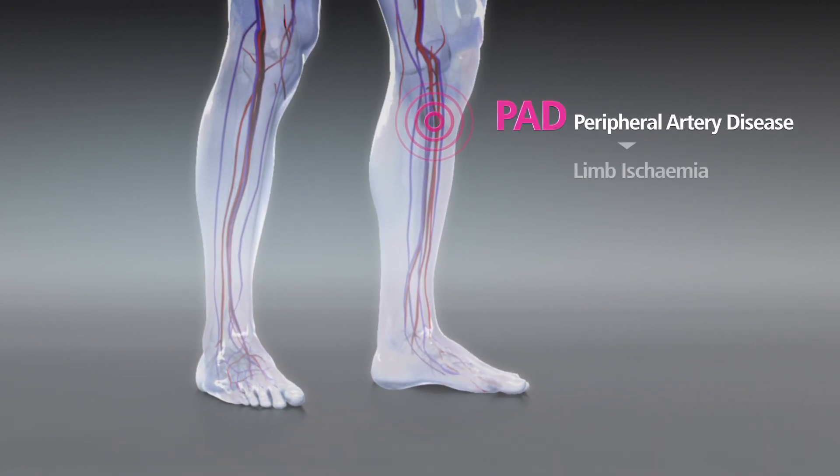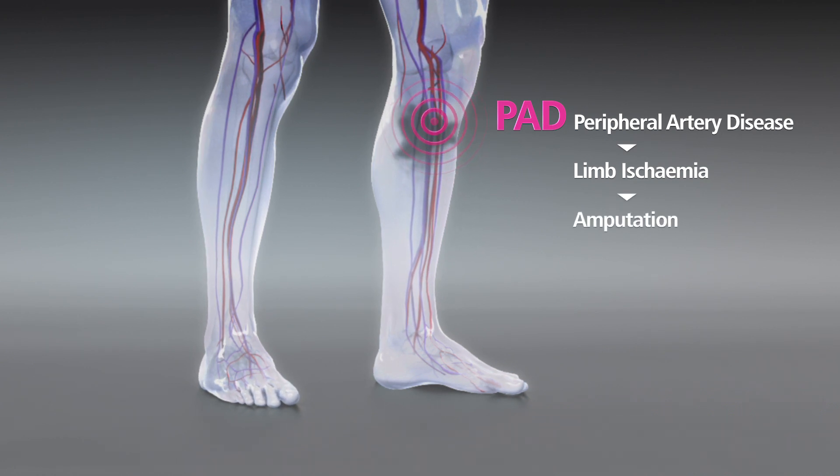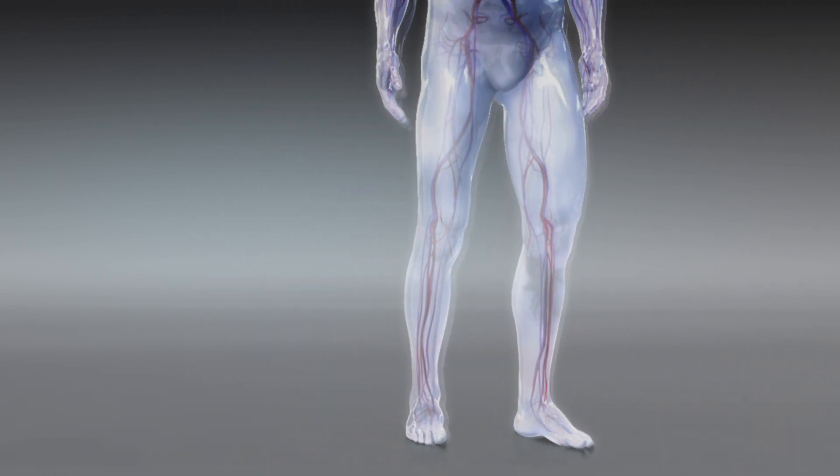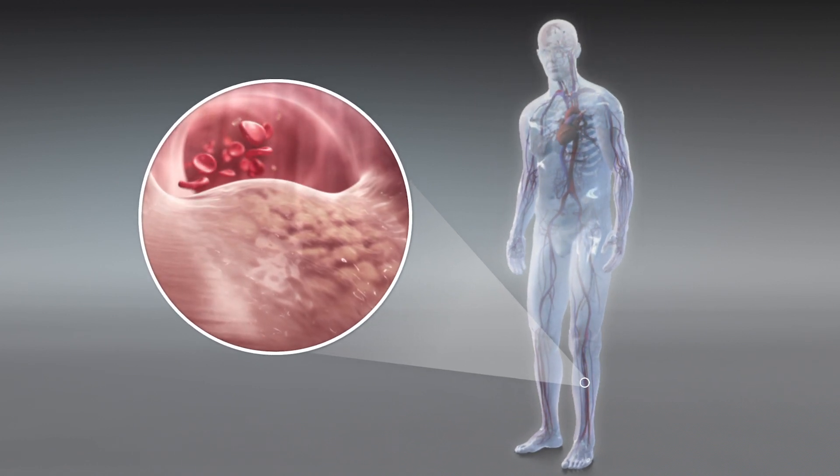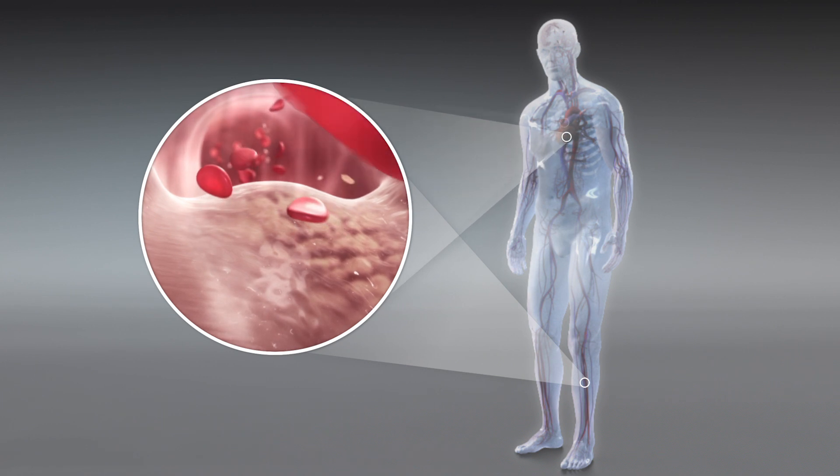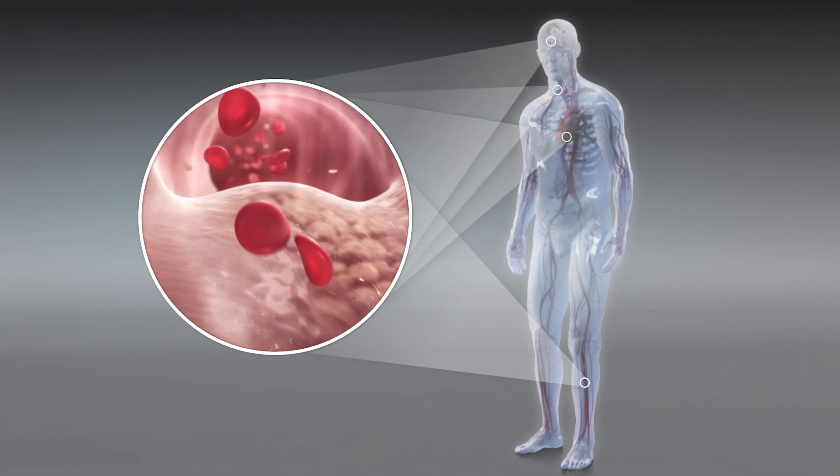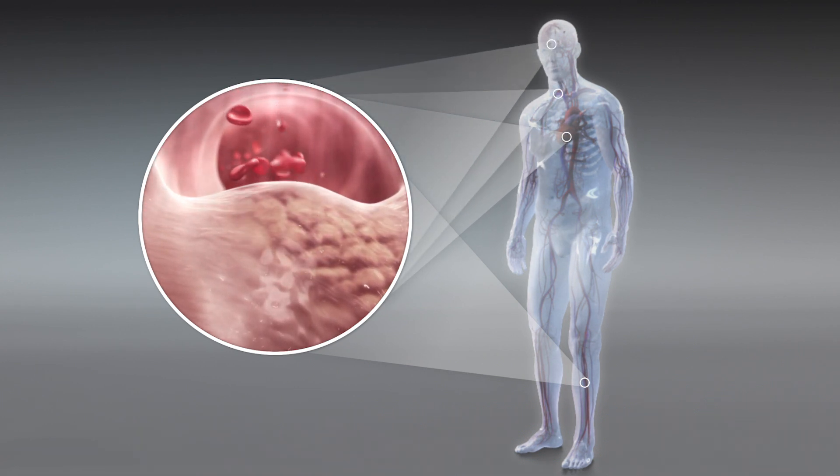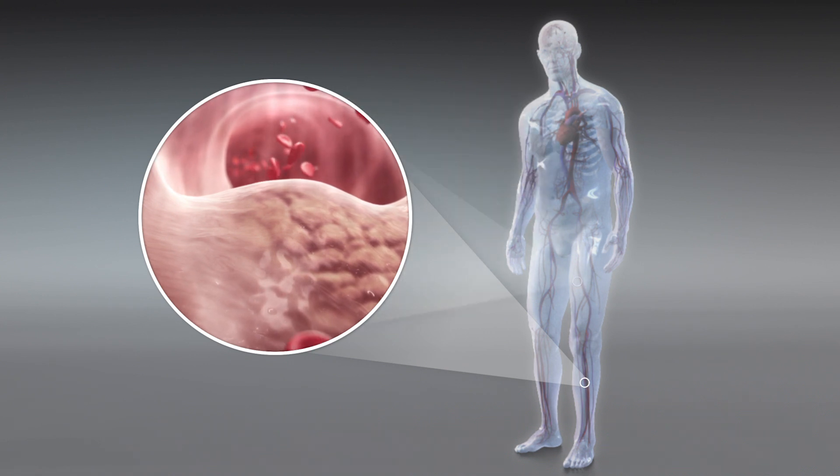In severe cases PAD can lead to limb ischemia and even amputation. Often patients with PAD also have manifestations of atherosclerosis in other parts of the body like the coronary, cerebral or carotid arteries. A deadly connection, all too frequently overlooked.